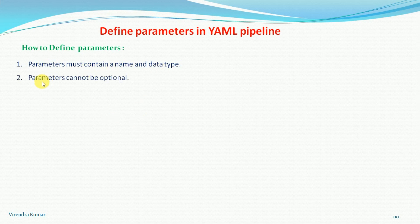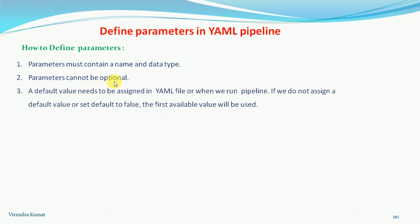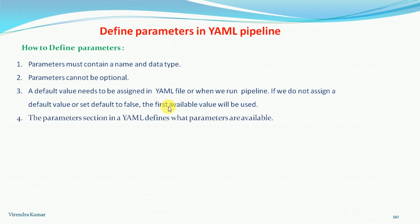A parameter cannot be optional. A default value needs to be assigned in a YAML file when we run the pipeline. If we do not assign a default value — set default to false — the first available value will be used. The parameter selection in the YAML defines what parameters are available.